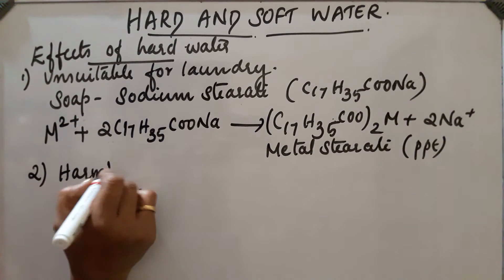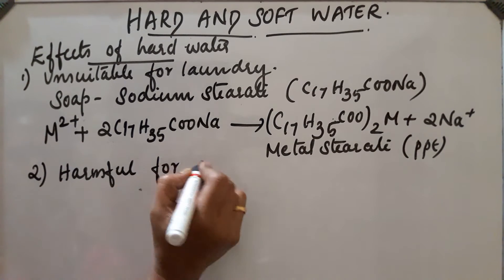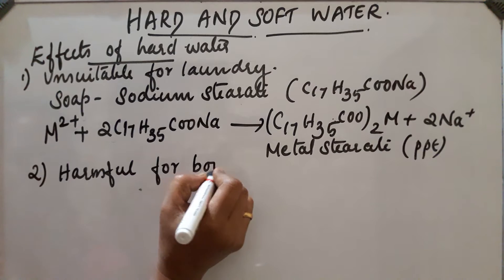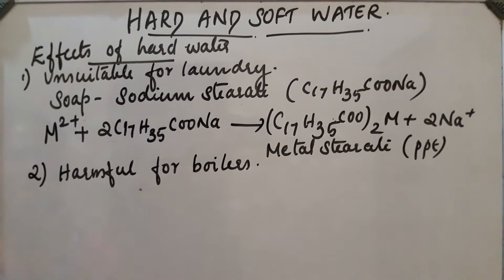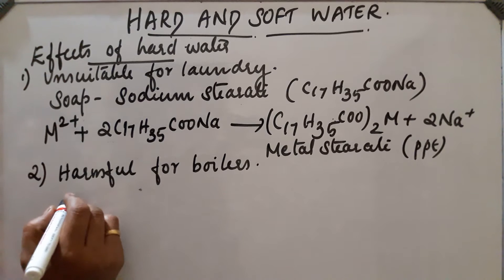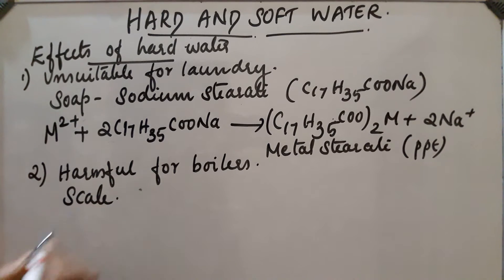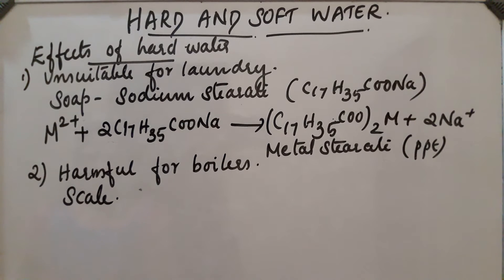The second effect: hard water is harmful for boilers. If hard water is used in boilers, it reduces their efficiency because of the deposition of lots of salts in the form of scale. Different salts are deposited as scale, so hard water is harmful for boilers.